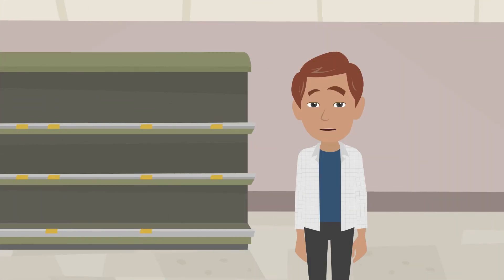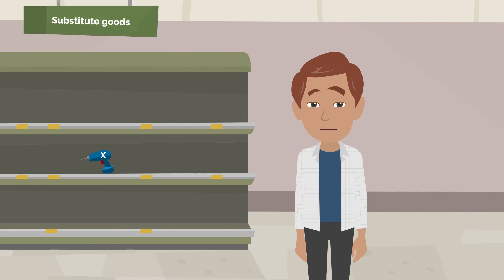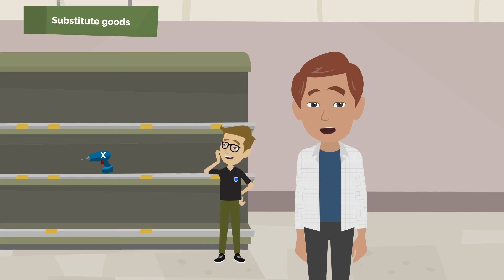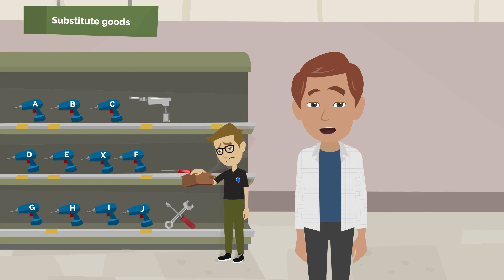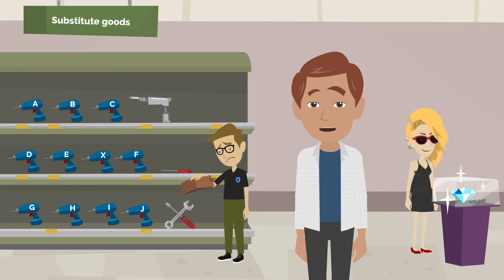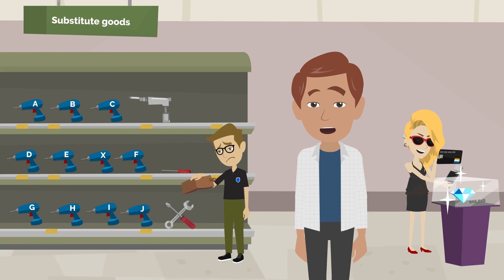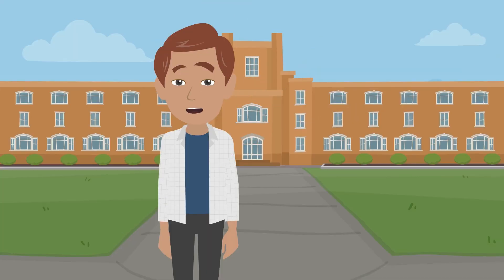In the context of factors affecting demand, it is also worth mentioning the number of substitute goods. In other words, if a customer can replace a product such as a drill from company X with drills from other companies, and there are other devices that serve the same purpose, then the demand for this product will be much lower. On the other hand, in the case of unique products and producers that are monopolists in their category, demand will have much greater potential to grow and remain at a high level.